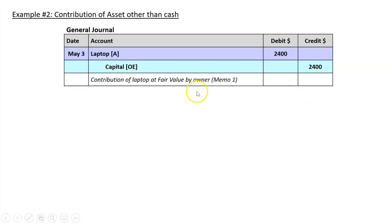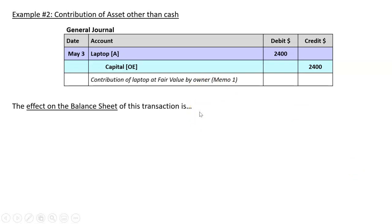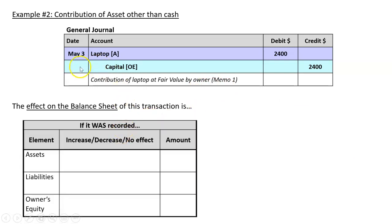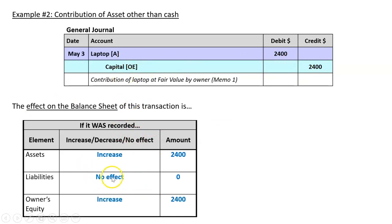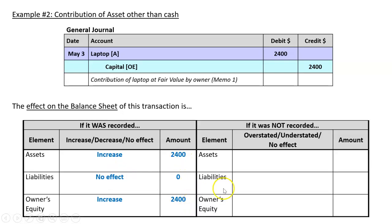What we also need to do is figure out the effect on the balance sheet of this transaction. A possible exam question asks: what happens when you record this transaction? Well, we've got a debit to an asset and a credit to owner's equity. So assets increased by $2,400. There's no effect on liabilities. And this credit to capital increased owner's equity. Our equation balances: assets equals liabilities plus owner's equity.